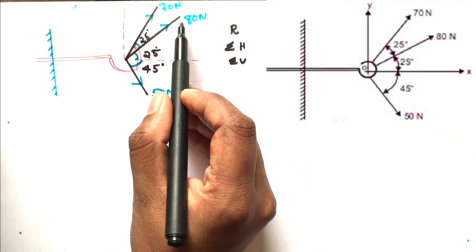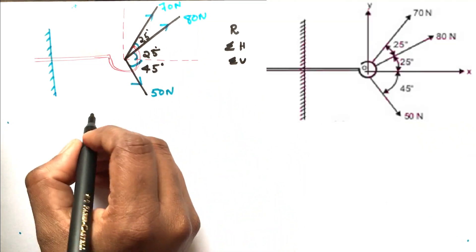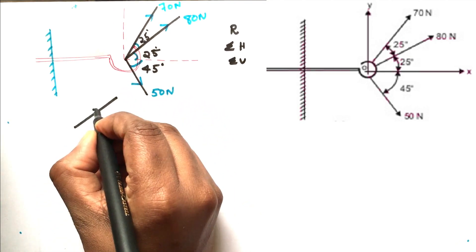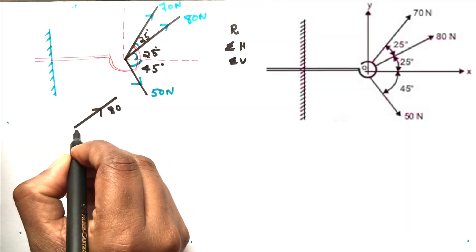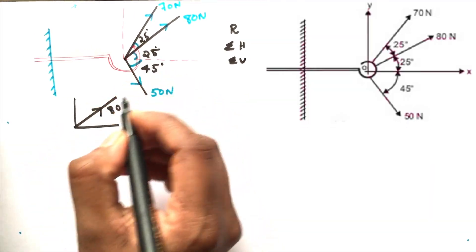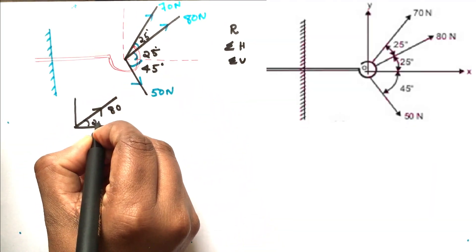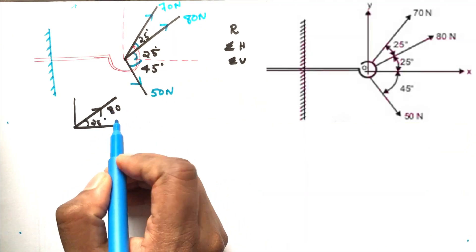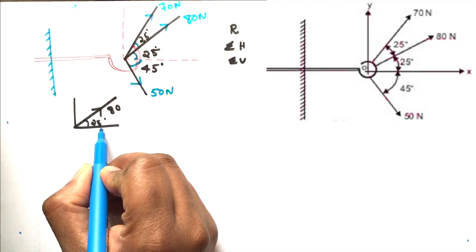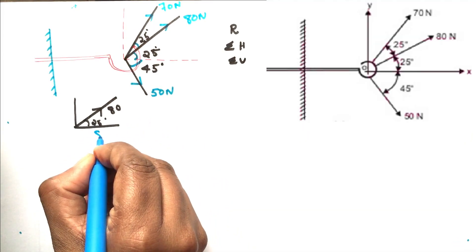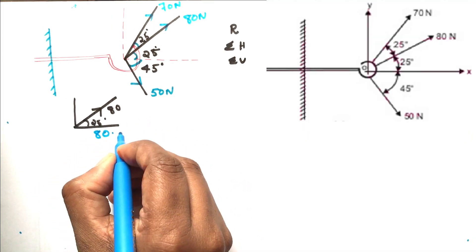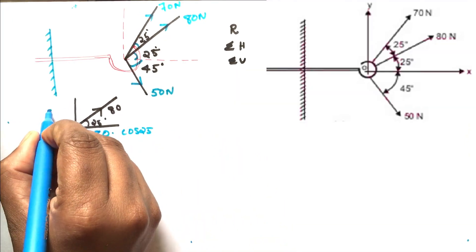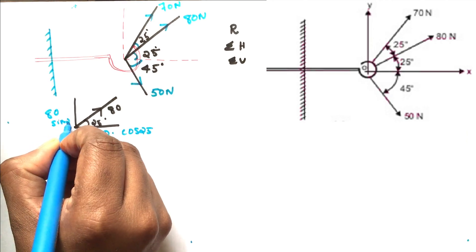First, we will resolve the 80 Newton force. We can consider it along the horizontal angle; this is 25 degrees. We can resolve this way. The cosine component is 80 cos 25, and the sine component is 80 sin 25.